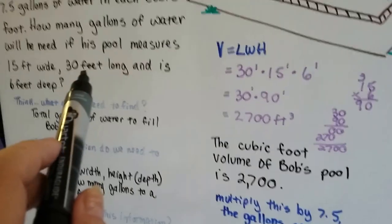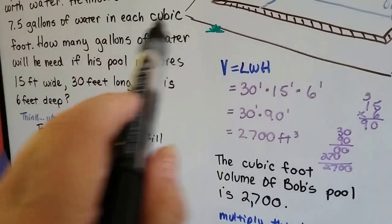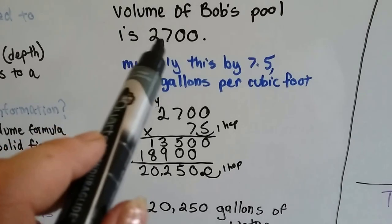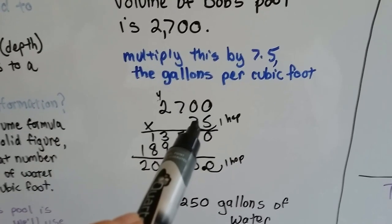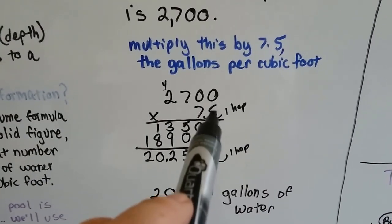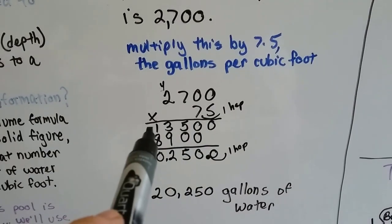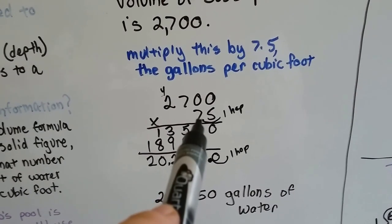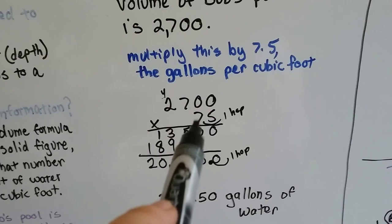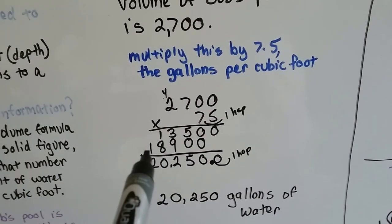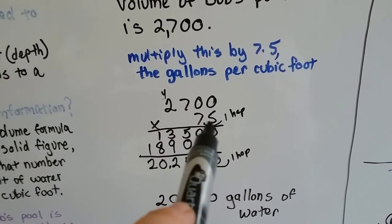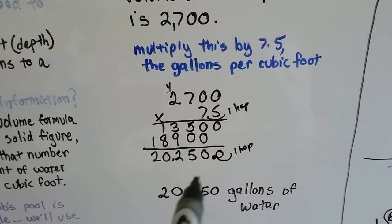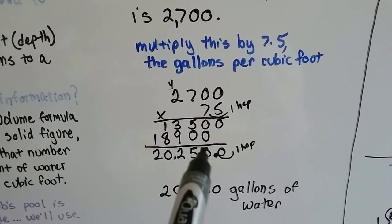We saw from the word problem that there's 7.5 gallons of water in each cubic foot. So in each cubic foot means we need to multiply the 2,700 by 7.5. And we do that. We multiply the 5 times the 0, the 0, the 7, and the 2, and we get 13,500. We move one space over because now we're multiplying in the tenths place. We multiply the 7 by the 0, the 0, the 7, and the 2, and we get 18,900. Now because there was one decimal place in the multiplication problem, we're going to put one decimal place over in the product. And we come up with 20,250.